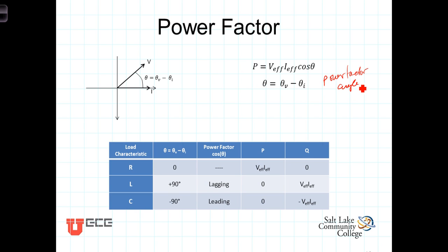And as we've seen, in the resistor theta V equals theta I, so that theta, the difference between the two, is zero. In an inductor, theta V is greater than theta I by 90 degrees, so the power factor angle is a positive 90. In a capacitor, just the opposite is true. The current leads the voltage in a capacitor, and theta V minus theta I is a minus 90 degrees.